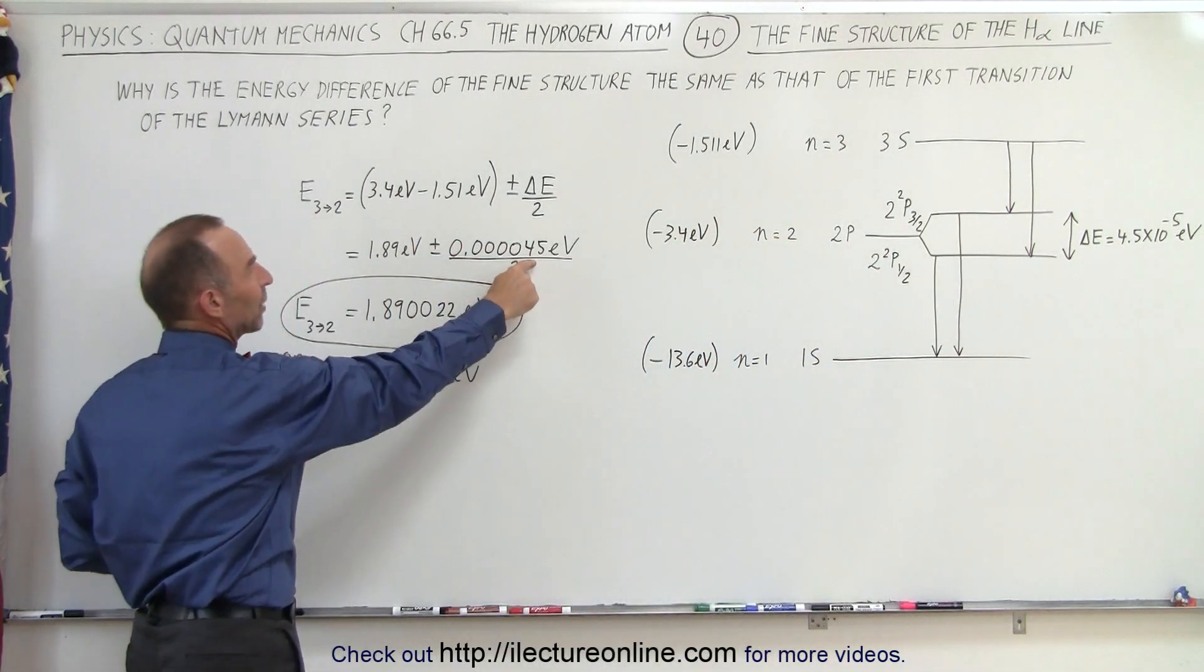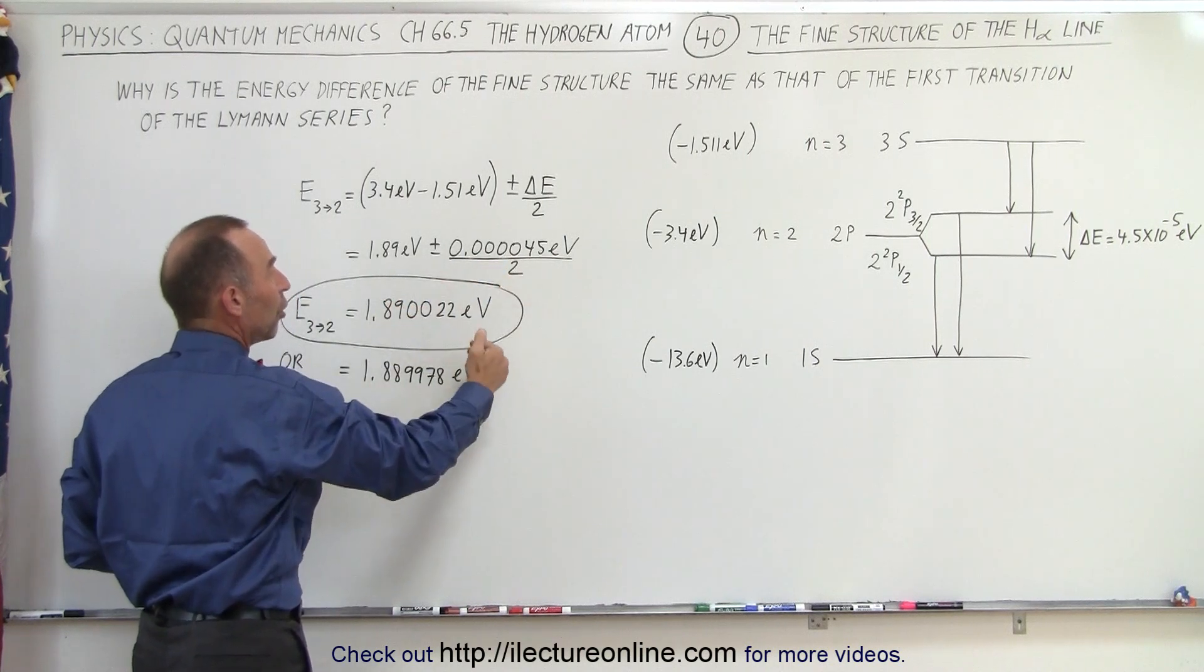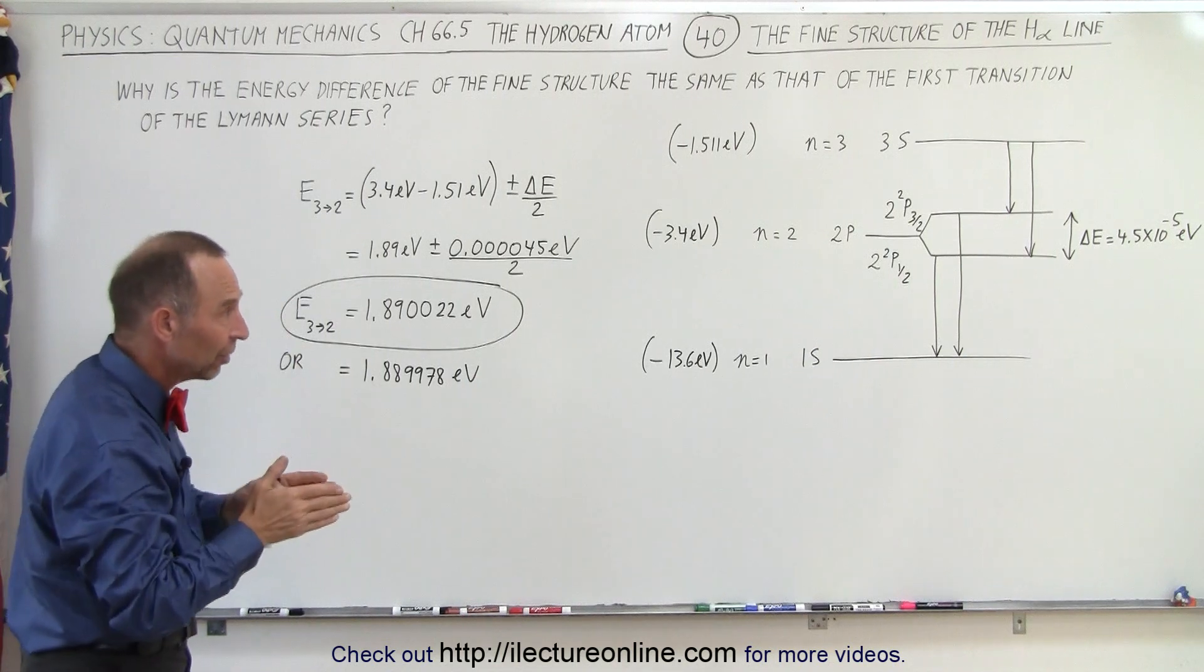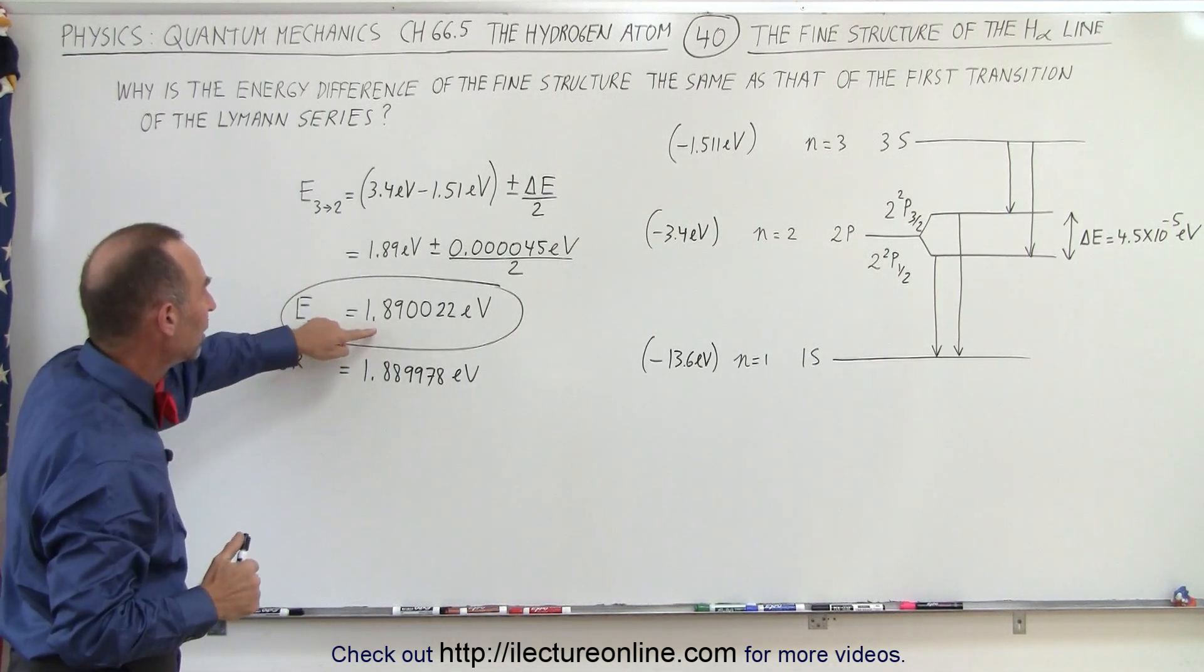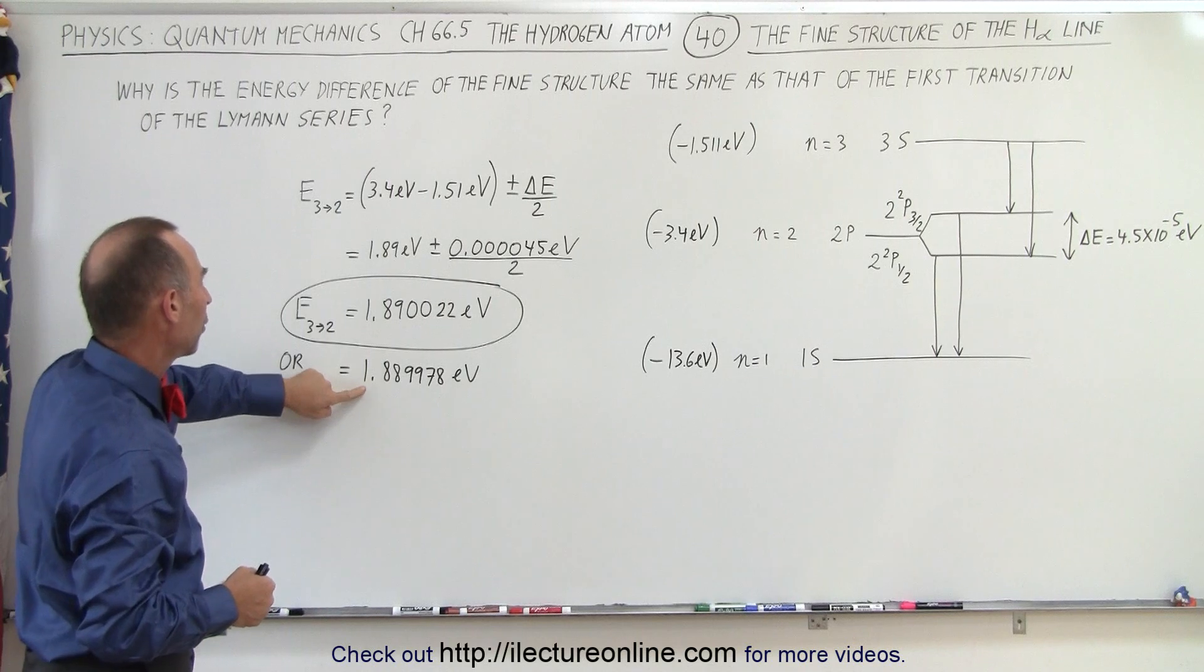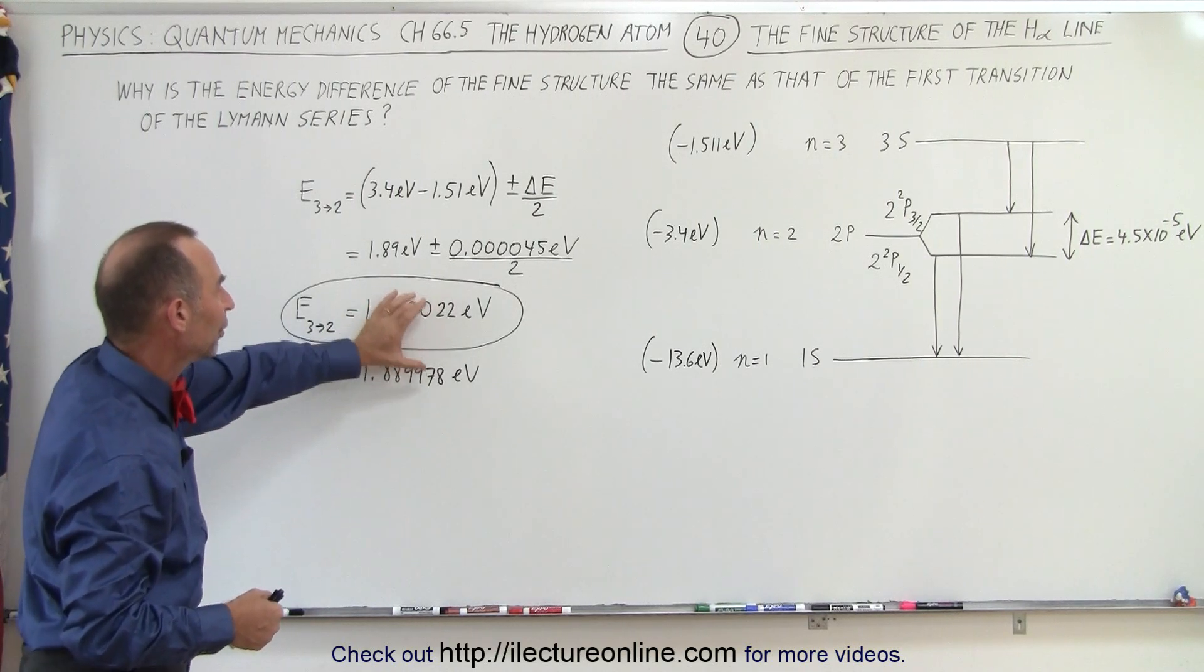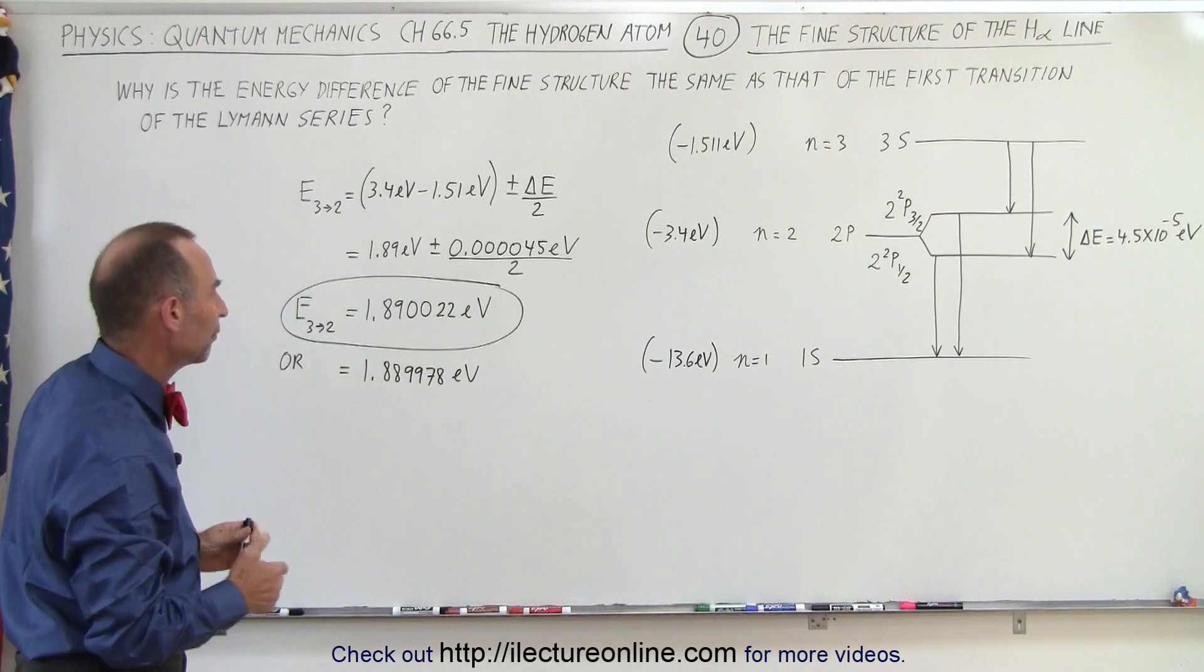So we increase it by about 0.000022 electron volts or we subtract that much so that means that the two lines creating that fine line structure for the H-alpha line will then be caused by an energy difference of 1.890022 electron volts or 1.889978 electron volts, a difference of 4.5 times 10 to the minus 5 electron volts.